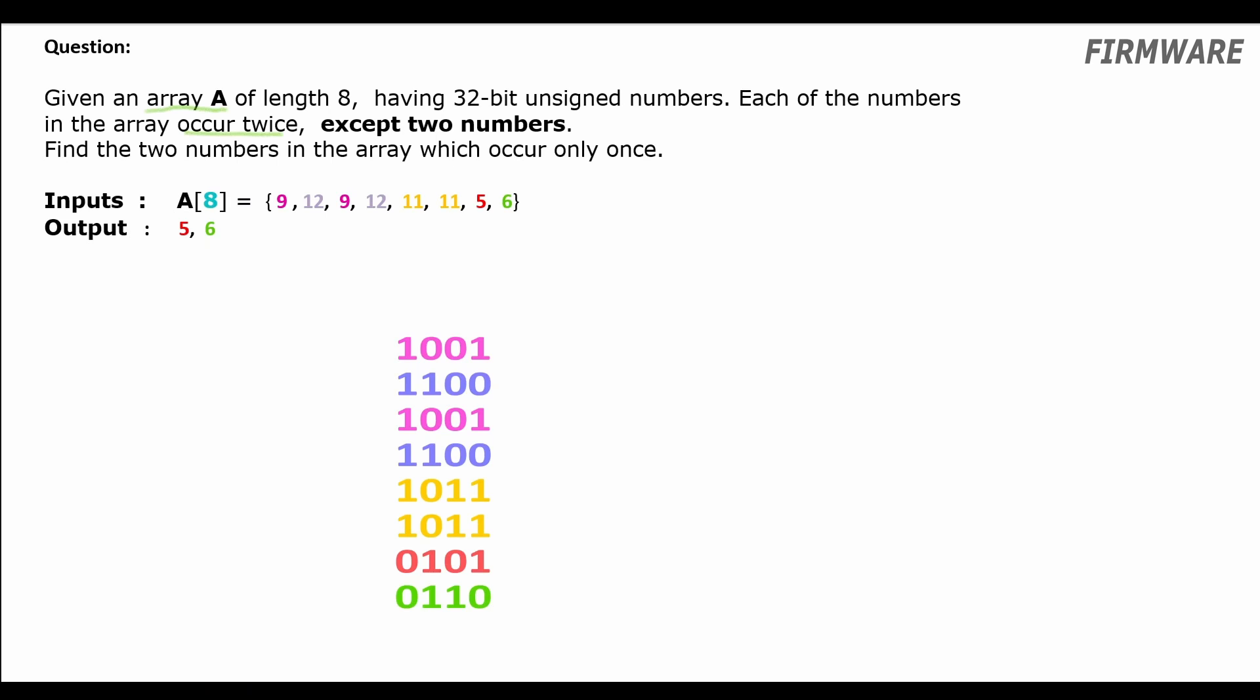As an example for this length 8 array we have numbers 9, 12 and 11 occurring twice and the numbers 5 and 6 occur only once. So our outputs are 5 and 6. If you want to try this question yourself please pause this video now and start coding.